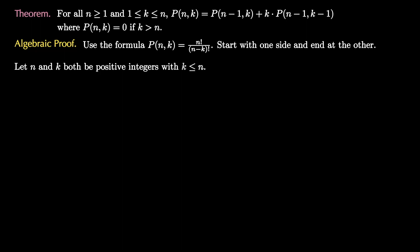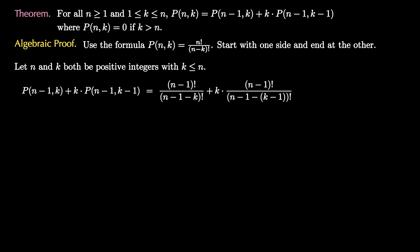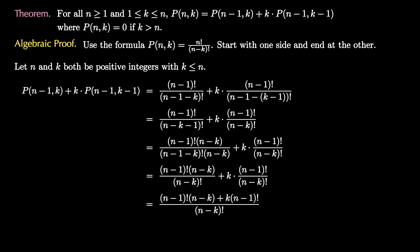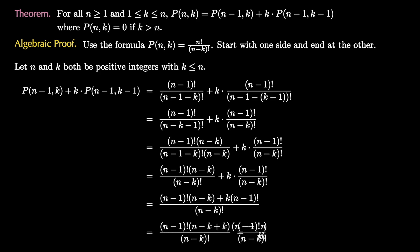Let n and k both be positive integers with k ≤ n. Apply the formula for P(n-1,k) and P(n-1,k-1). We can change the first denominator to (n-k-1)! and the second to (n-k)!. Then get a common denominator by multiplying the first fraction by (n-k)/(n-k), so both denominators are (n-k)!. Add the numerators, factor out (n-1)! from the numerator, leaving n-k+k which simplifies to n. So we get n! over (n-k)!, which is exactly the formula for P(n,k). This algebraic manipulation verifies the identity.